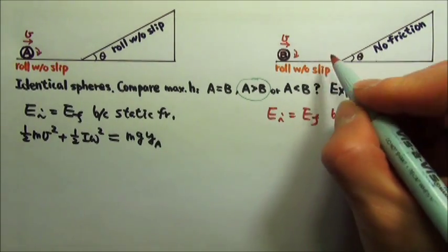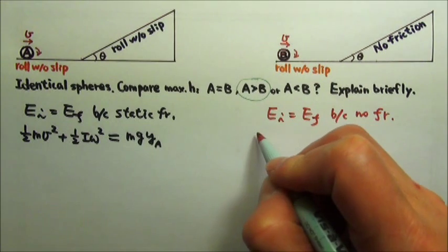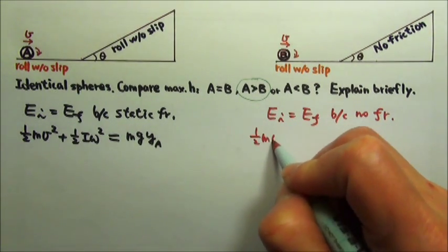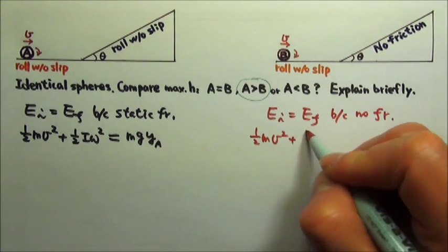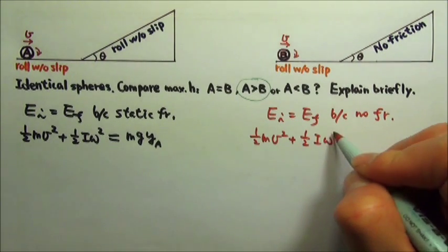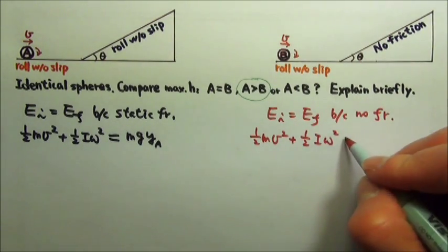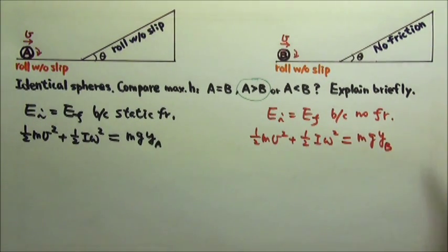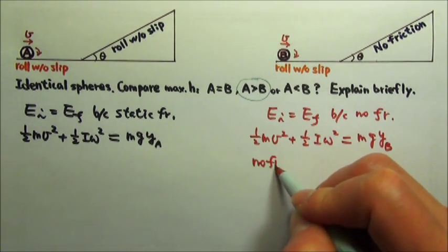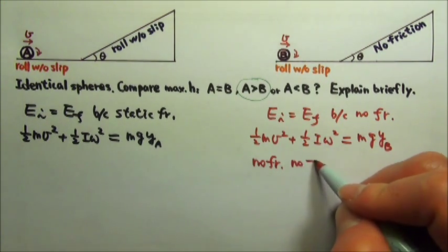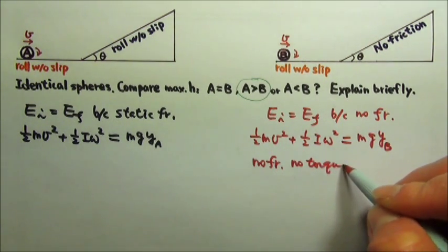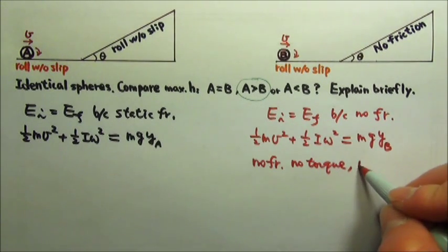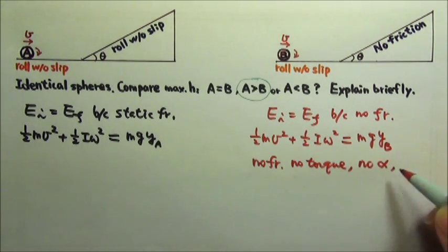At the bottom of the incline, rolls without slipping, so the sphere has both the translational kinetic energy and the rotational kinetic energy. At the maximum height, we would have mgy, the maximum height for B. Now, because there is no friction, that means that there is no torque acting on the sphere. No torque, no angular acceleration.